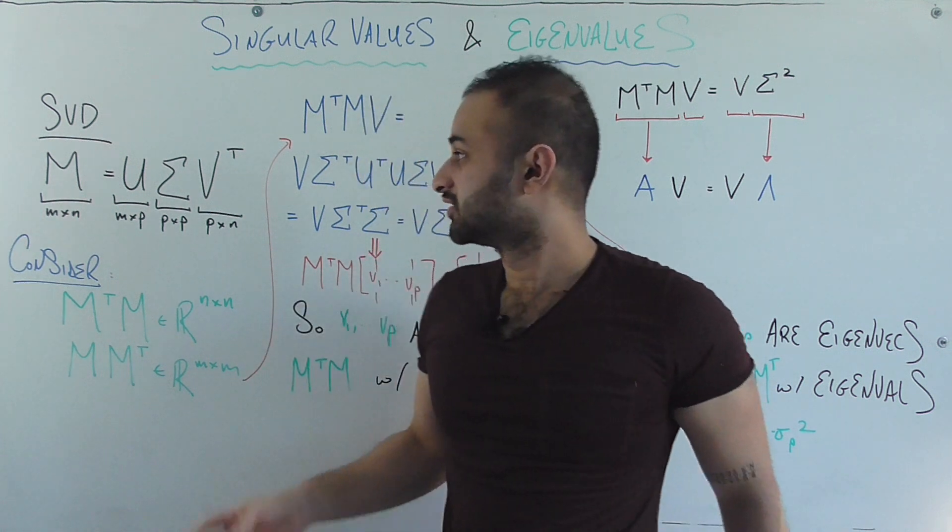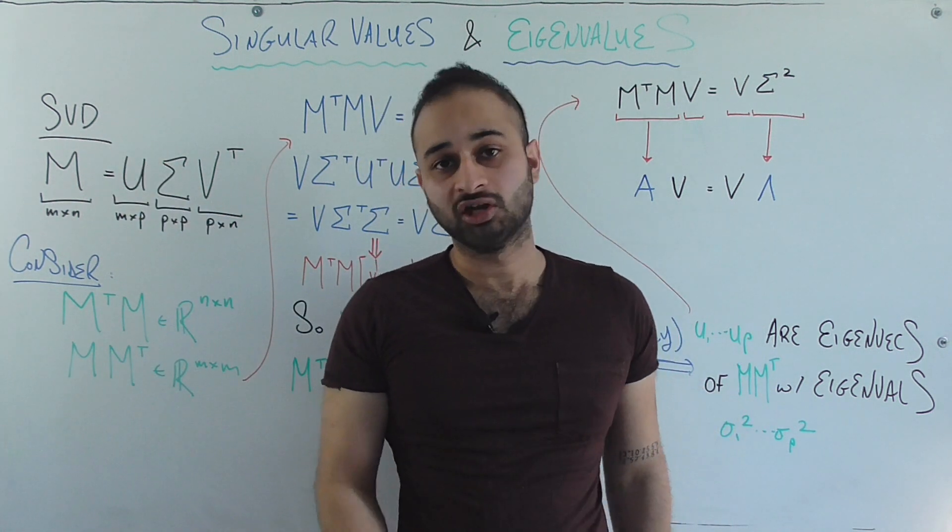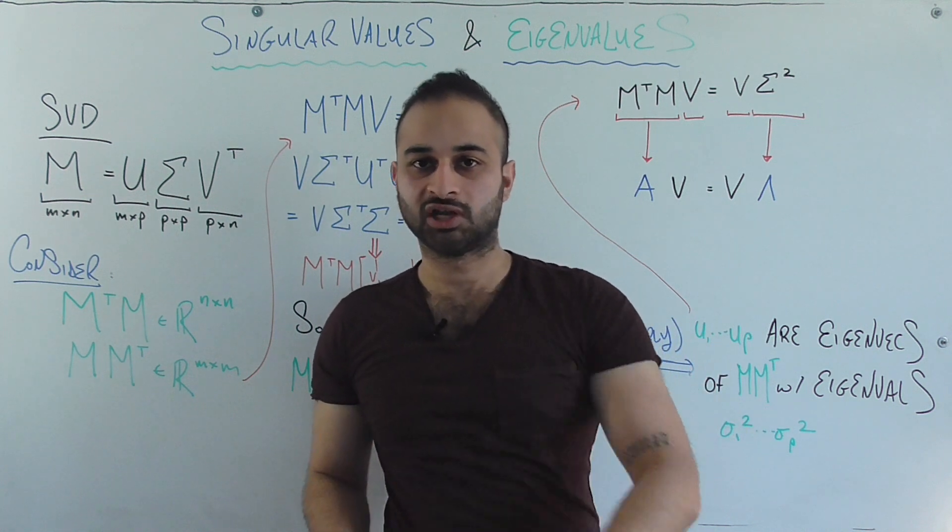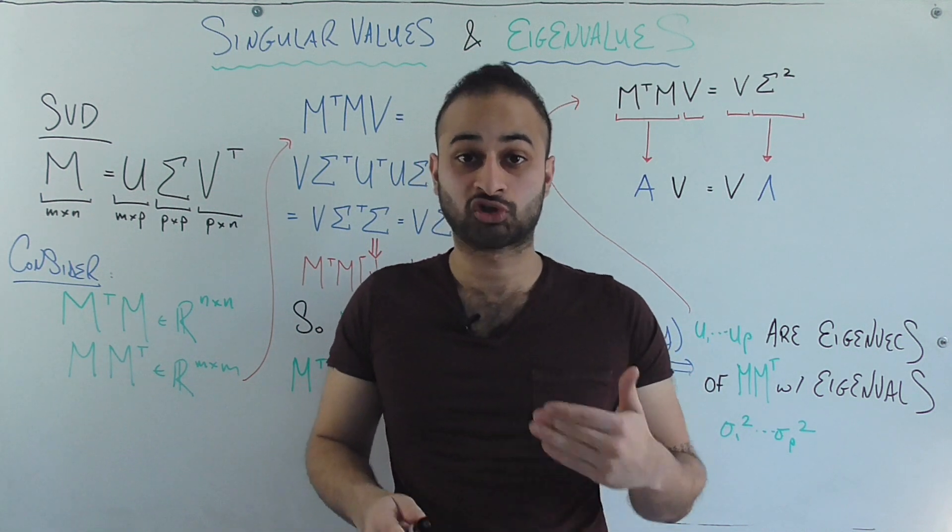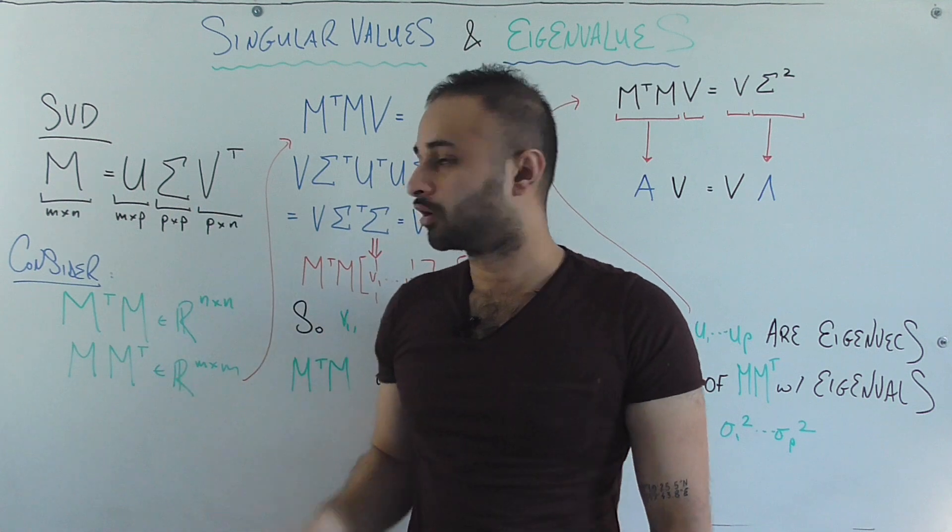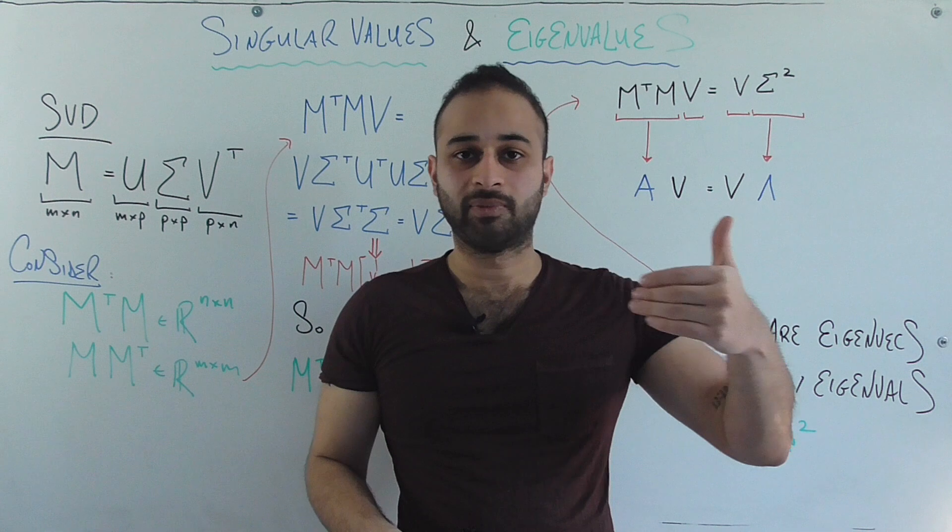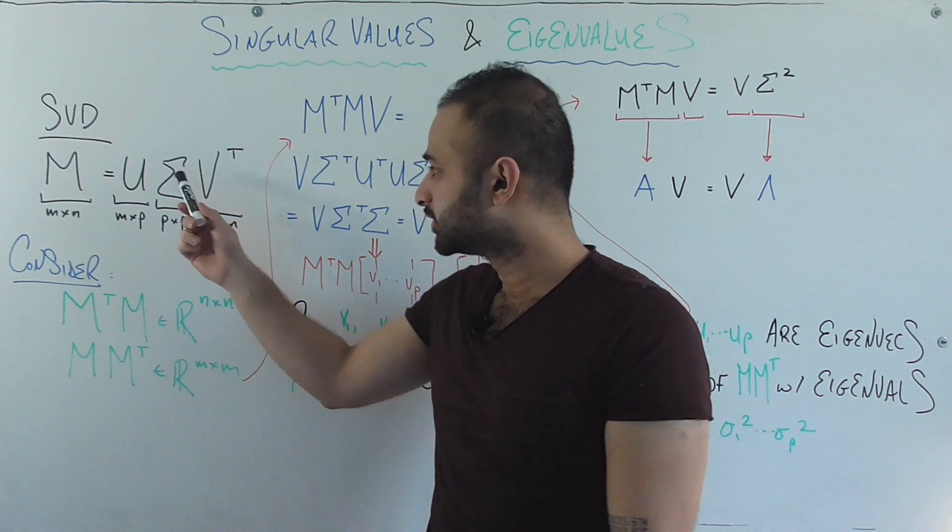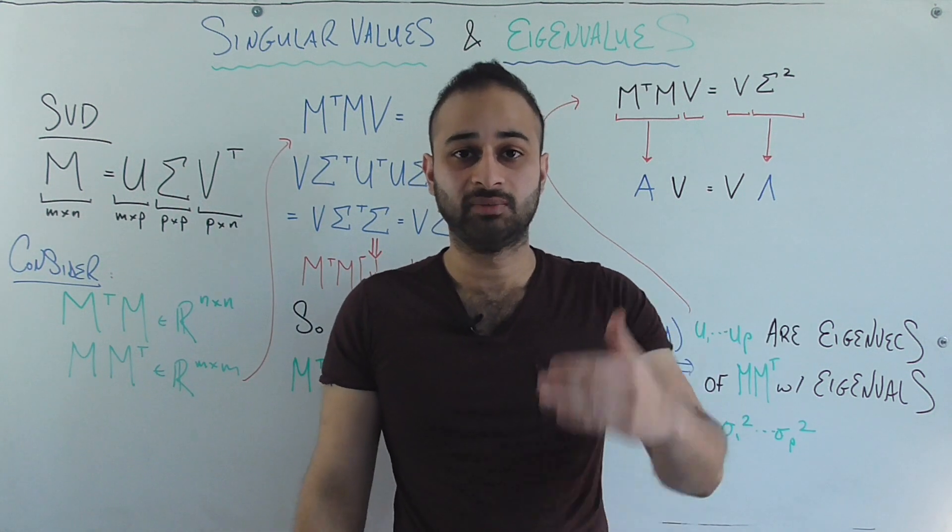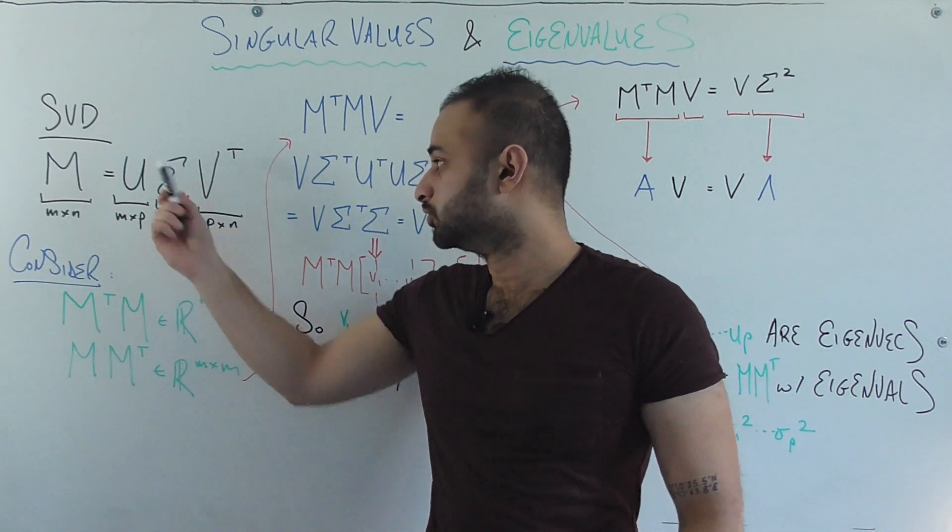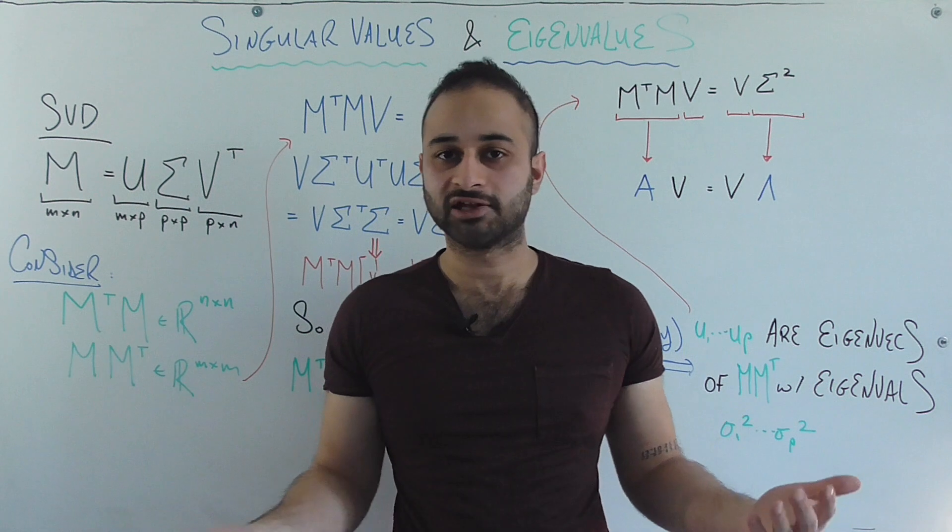So let's start from where we left off, which is that the SVD of any M by N matrix M is given by U sigma V transpose, and we learned that each of these components has special properties. U and V are orthonormal matrices, which means that they contain vectors which are linearly independent to each other, and sigma is a diagonal matrix P by P containing the singular values, and also U and V contain singular vectors, both left and right.